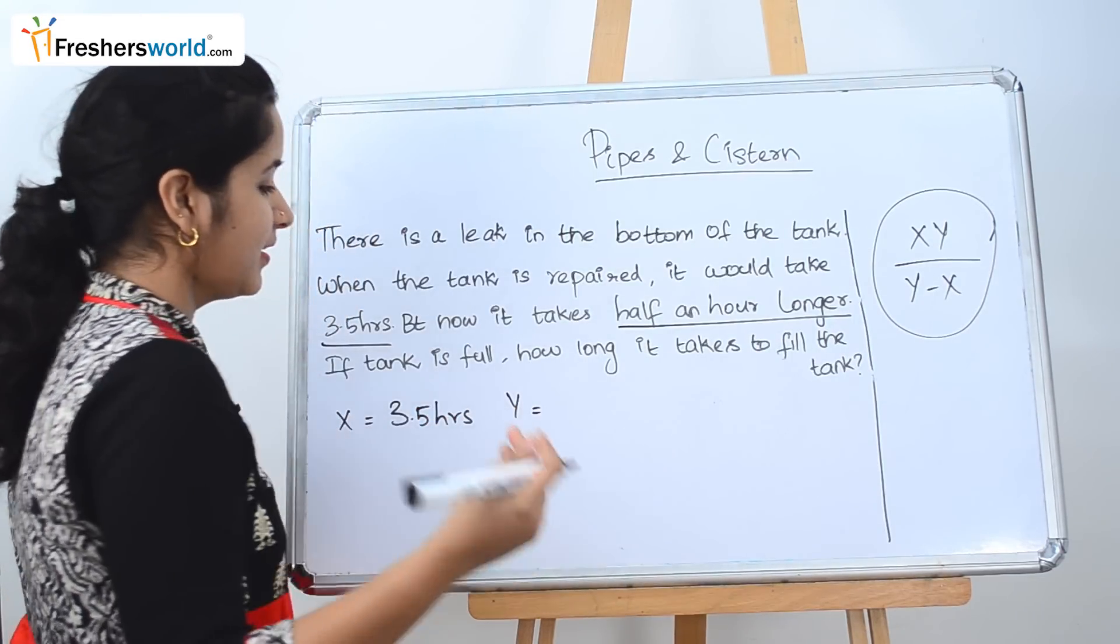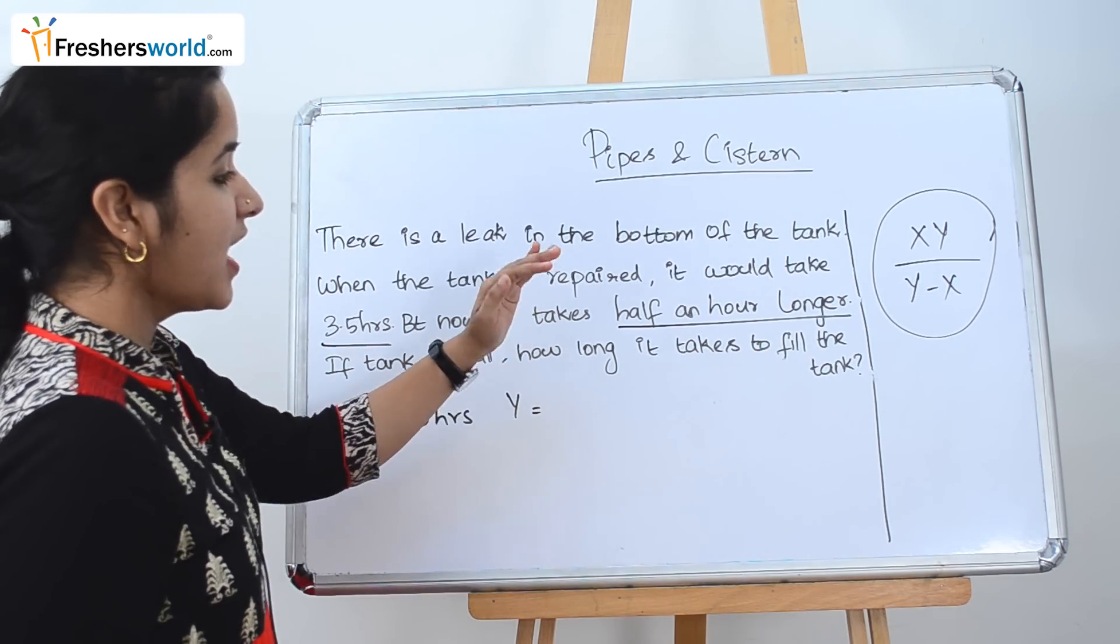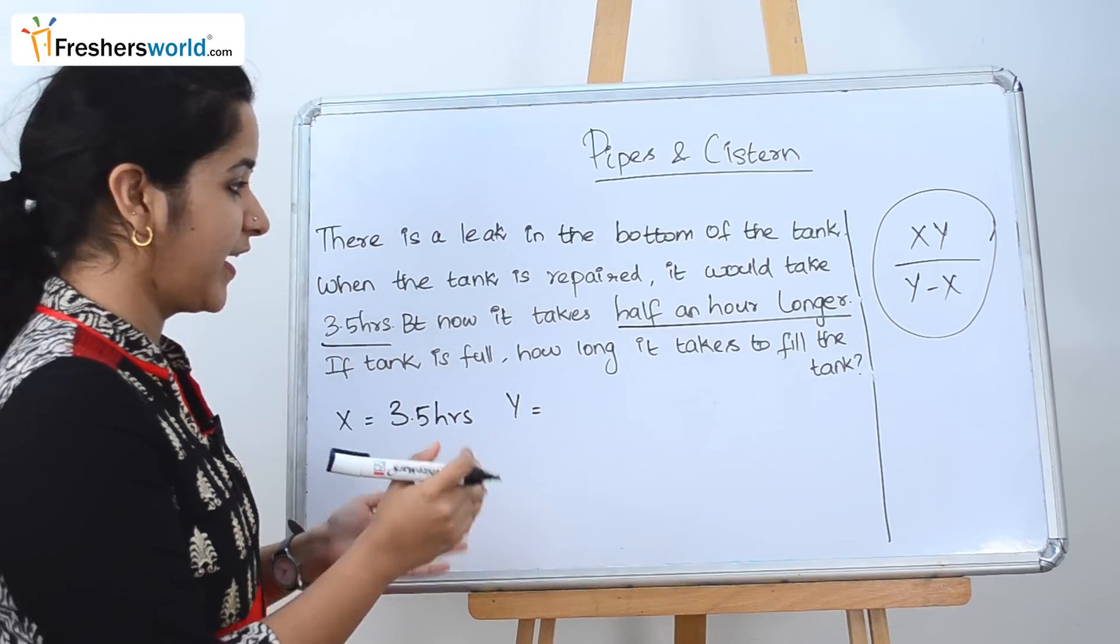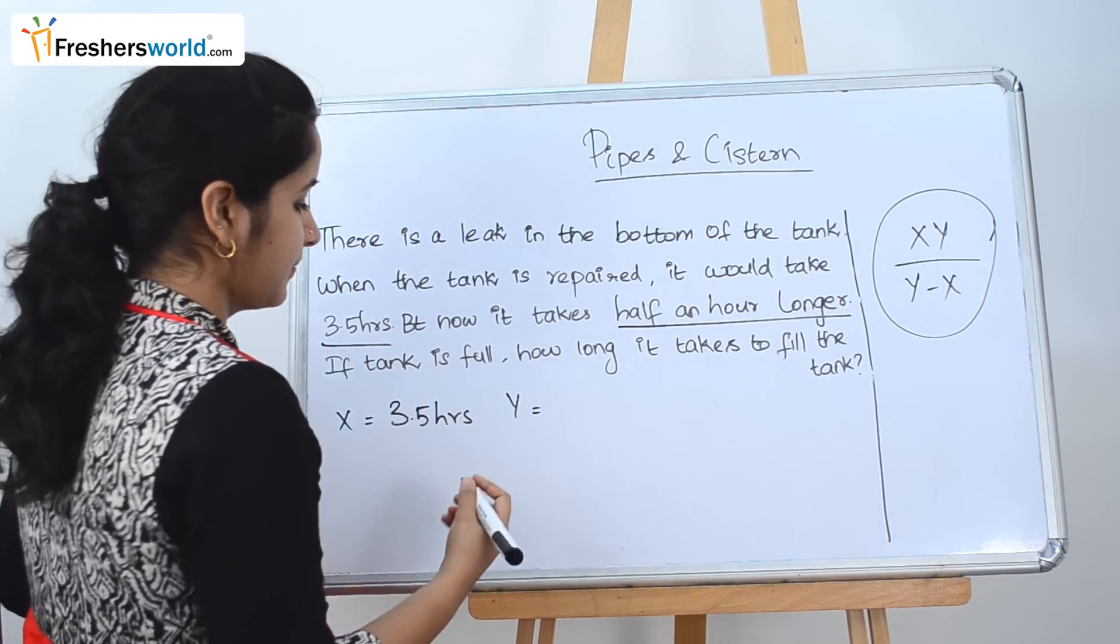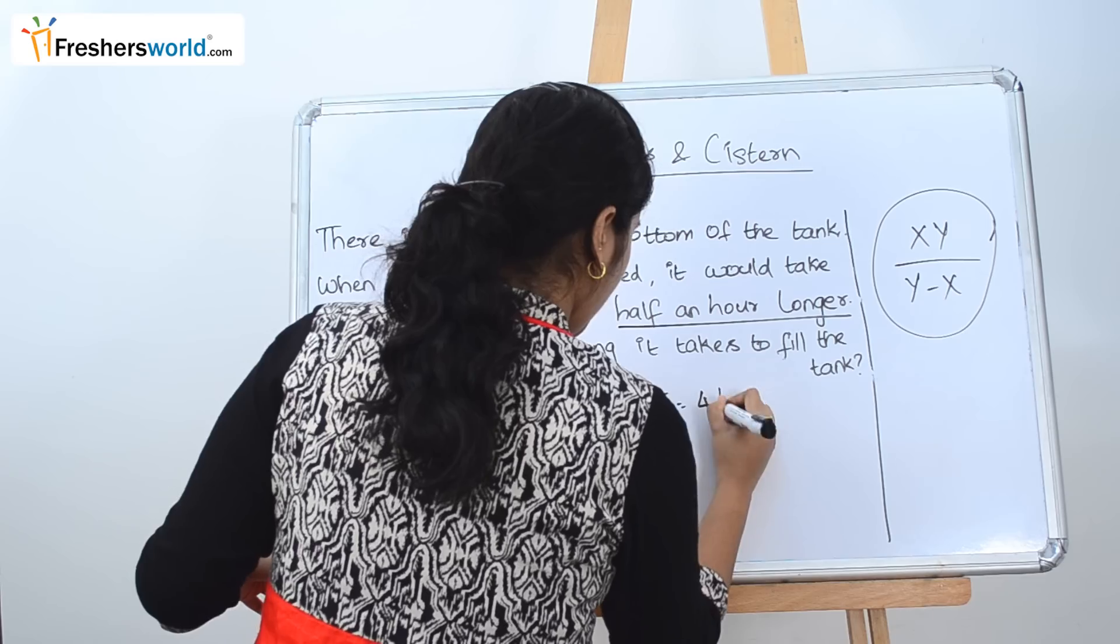Y is nothing but how much time it takes now. Now they have given half an hour longer than the original time. So original time is 3.5 plus half an hour longer. So 3.5 plus 0.5 equals 4 hours.